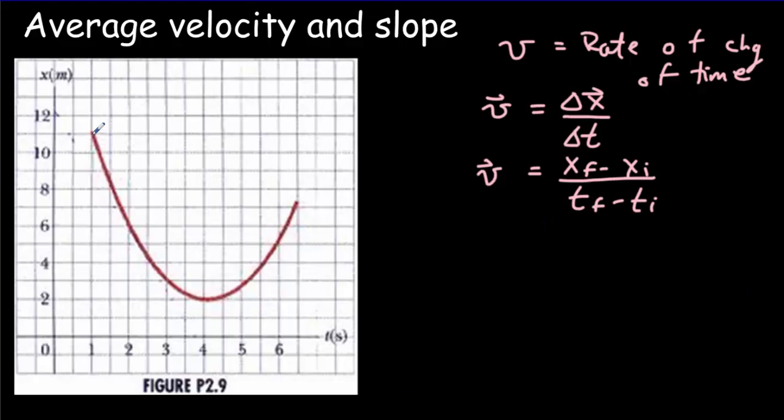So let's say I asked you to find out the velocity between this point and this point. There would be an initial time, one second in this case, a final time, 6.5 seconds, an initial position, 11 meters, and a final position, 7 meters. And that allows me to create a little right angle triangle here. And this side of our triangle would be x final minus x initial. That would come out to be negative because our slope is downwards. This side of the triangle would be t final minus t initial.